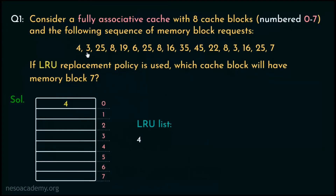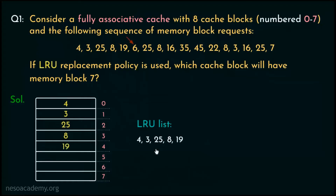For block request number 3, it will be placed inside line number 1 and thereafter added into our LRU list, so now 3 is the most recently used block. Similarly, from block request number 25 onwards, blocks will be placed inside their respective cache lines and included in our LRU list.